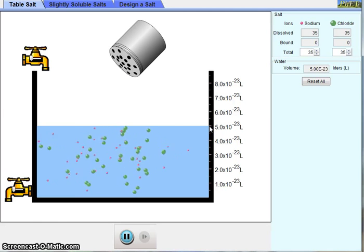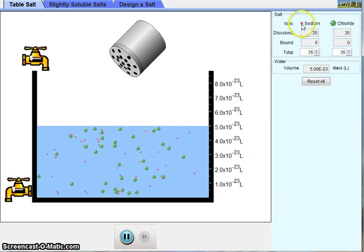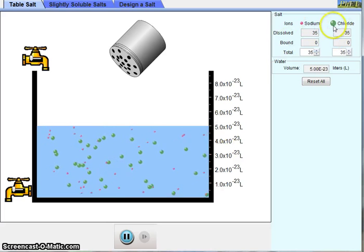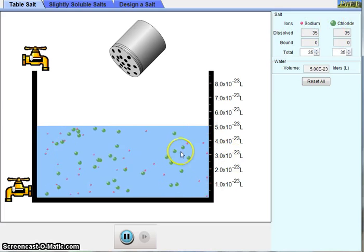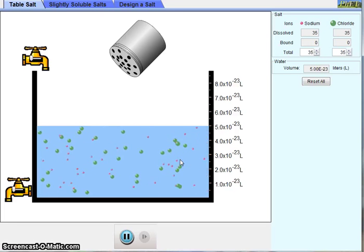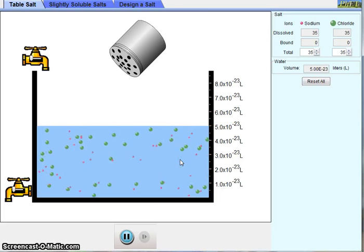There's a color coding being used in this animation, where the pink dots represent sodium ions, which would have a positive 1 charge, and the larger green dots represent the chloride ions, which have a minus 1 charge. When the salt is added to the water, we see that the ions are breaking apart, and we call this process dissolution.